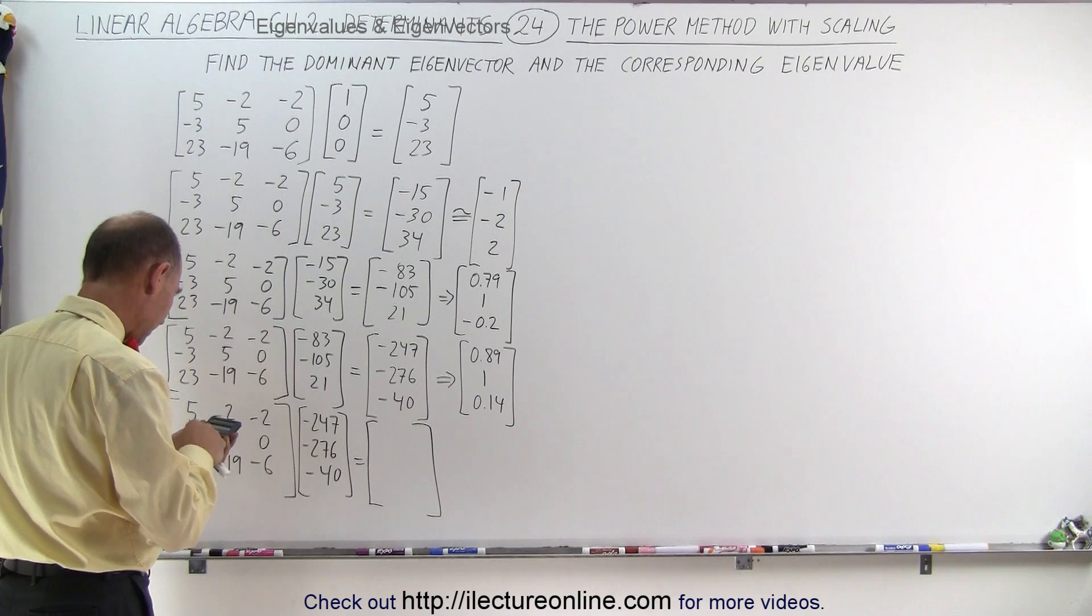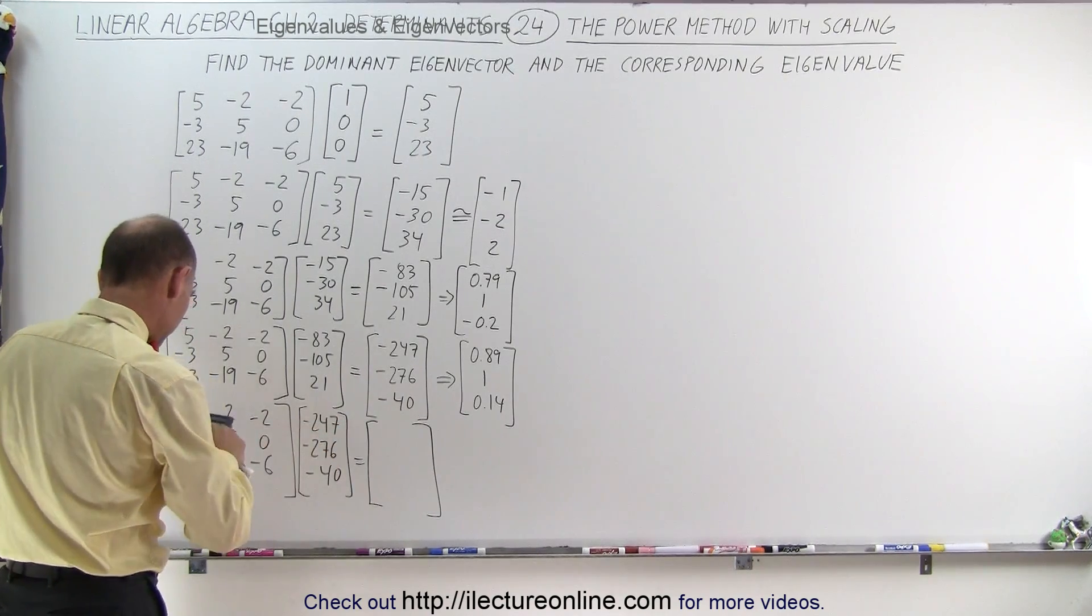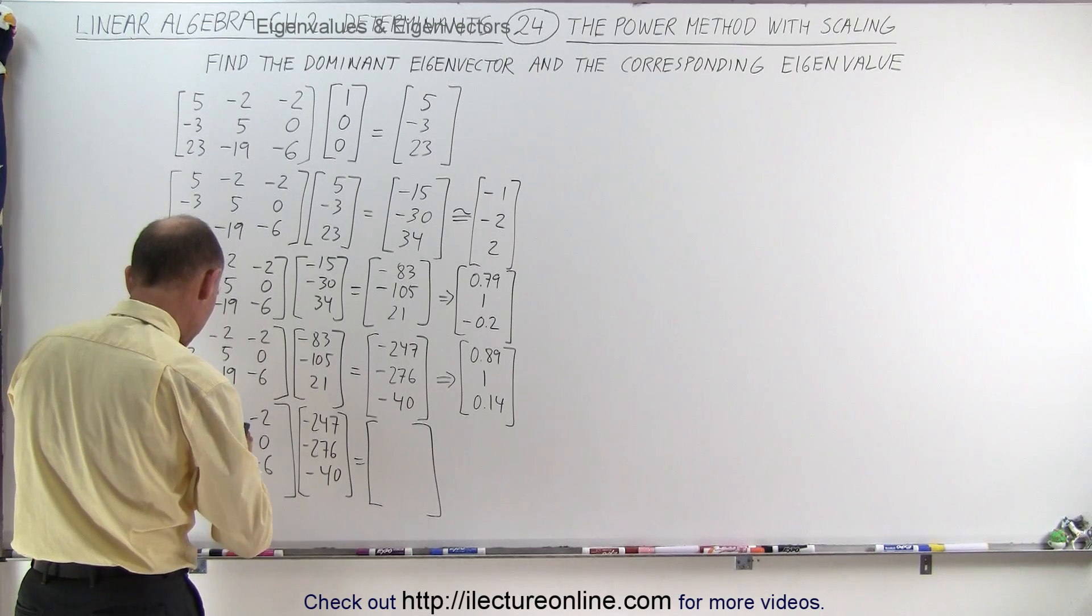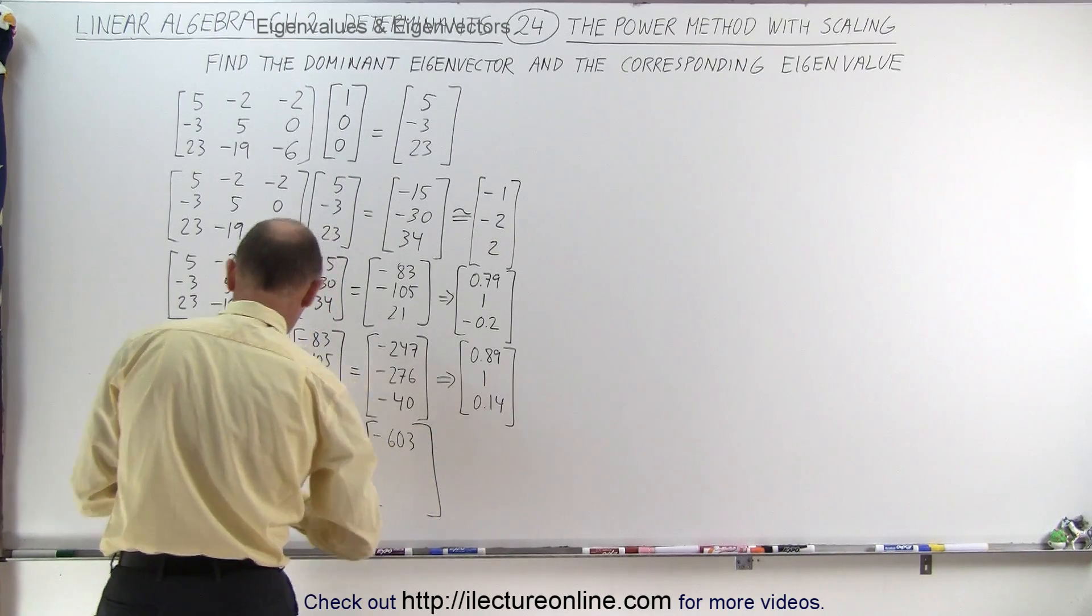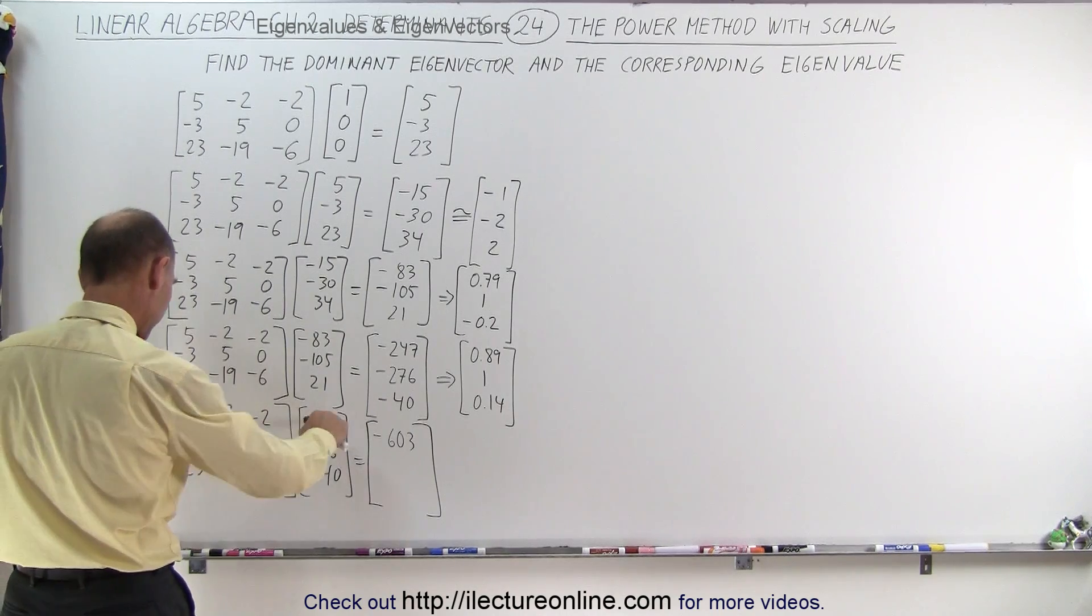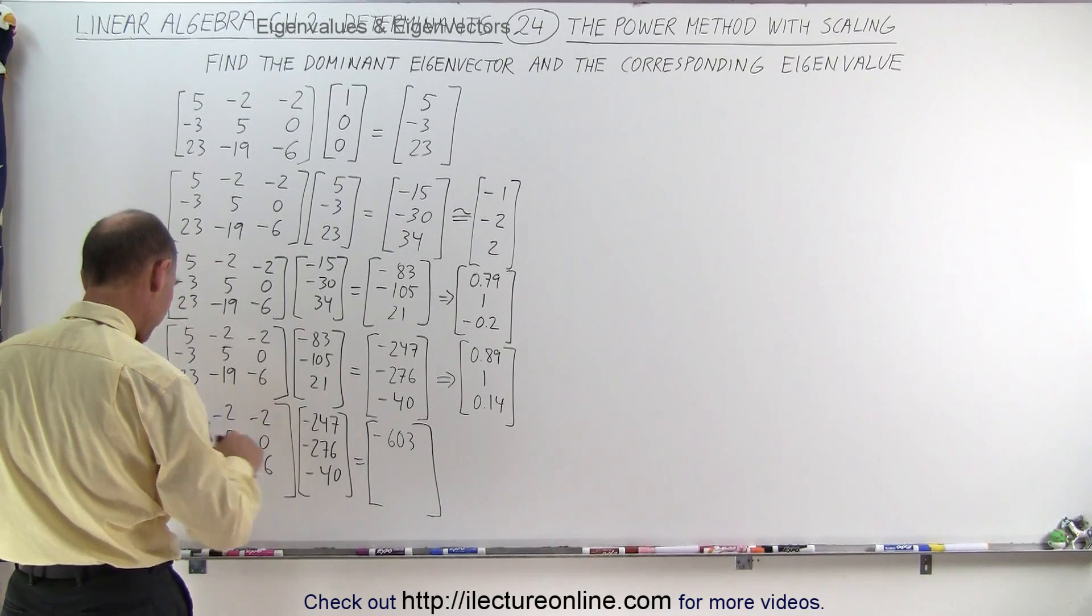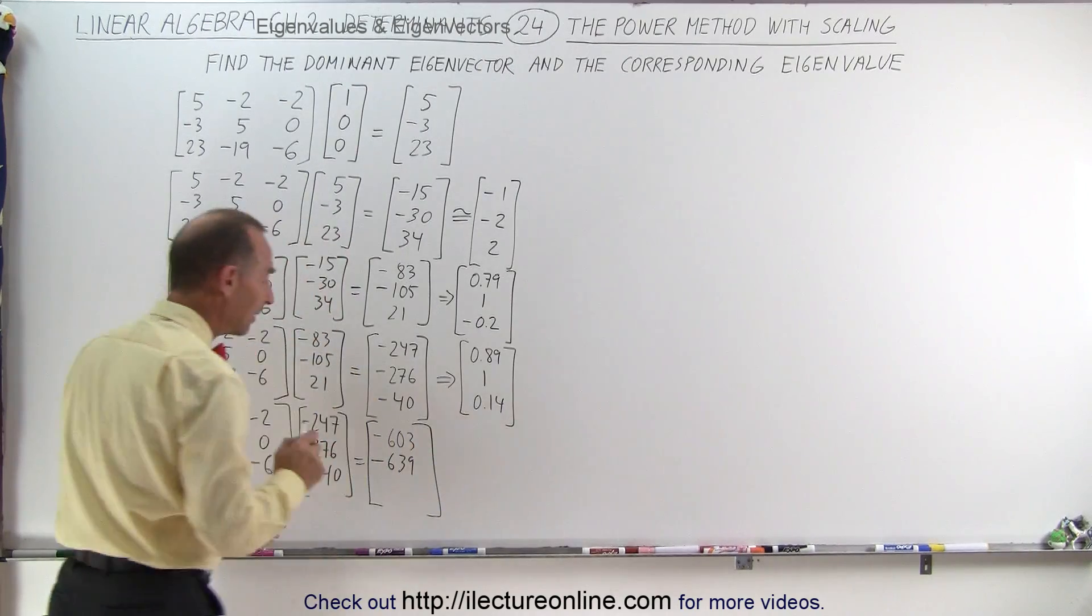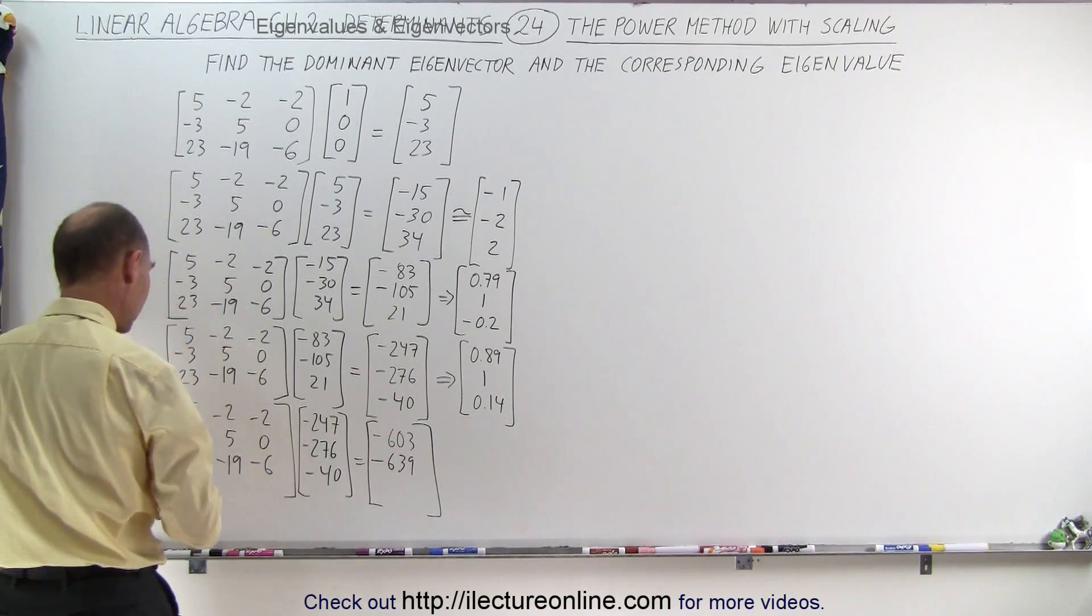5 times 247. 2 times 276 and plus 80. That's minus 603. Next. Second row, this column. 3 times 247. Minus 5 times 276. And that's a 0. So this becomes a minus 639. Now, take a look at that. This is becoming very close to a 1 to 1 ratio, which is a very good sign. Now, what about the third number?